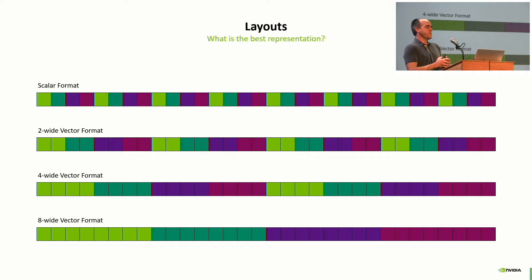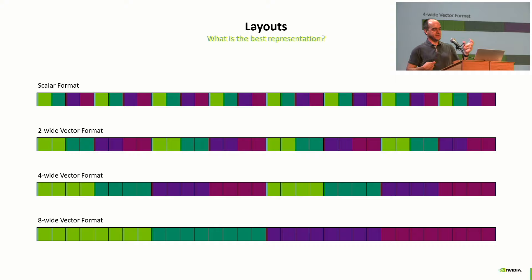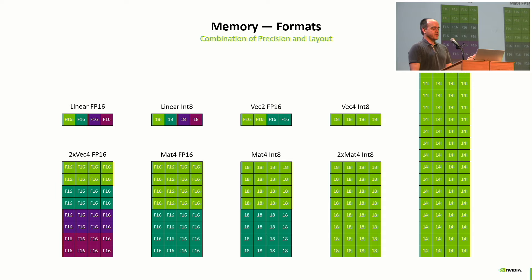Next is layout. How do you parallelize your network and your data? With a scalar format, you can do 32 data points with 32 threads, or read 32 times. With vector formats, one thread can read two data points by accessing a single vector element, or two threads can work together on processing data in parallel. When you combine layouts and precision, you get memory formats. Linear FP16, introduced with the Maxwell architecture, reduces your precision by half, reduces bandwidth by half, and can speed up execution by 2x.